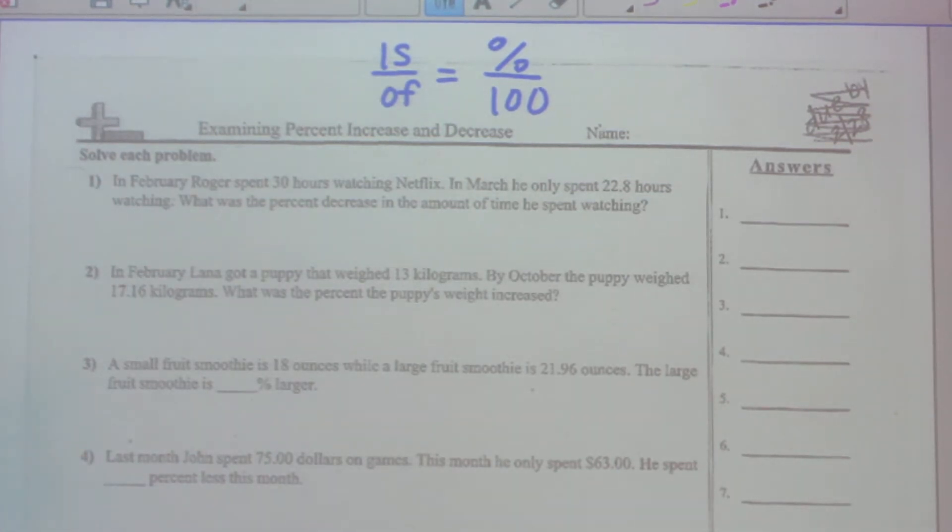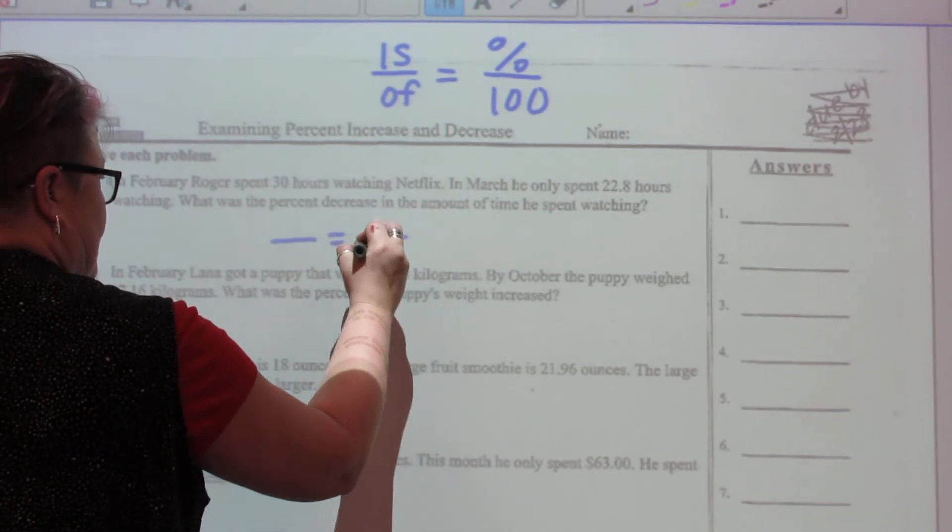In February, Roger spent 30 hours watching Netflix. In March, he only spent 22.8 hours watching. What was the percent decrease in the amount of time he spent watching? So it's a percent problem, I immediately set up what I know I need to do.